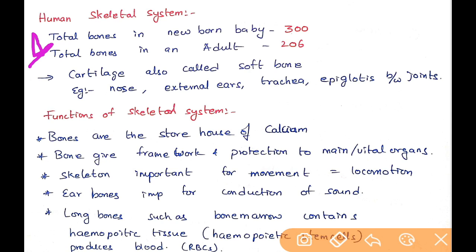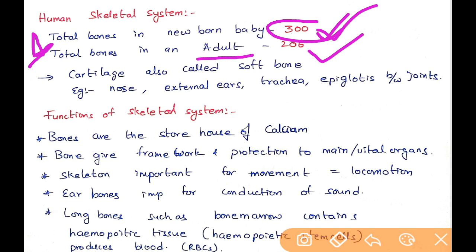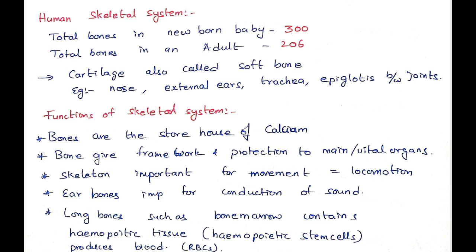The total number of bones in newborn babies is 300, and in an adult it is 206. Where are the remaining 94 bones? At birth there are 300 bones, but later those bones fuse together to form single bones, reducing the number to 206.